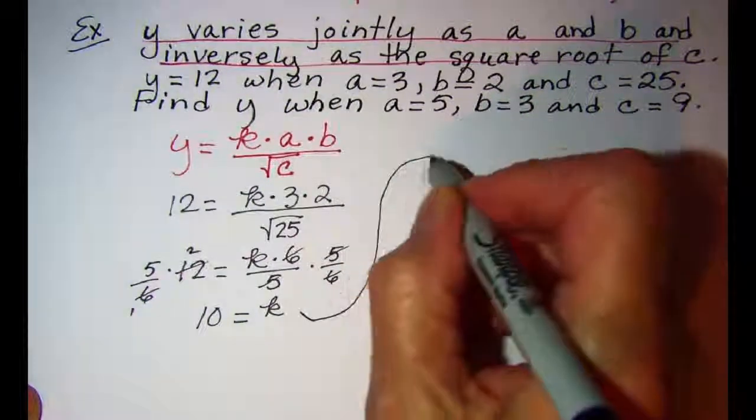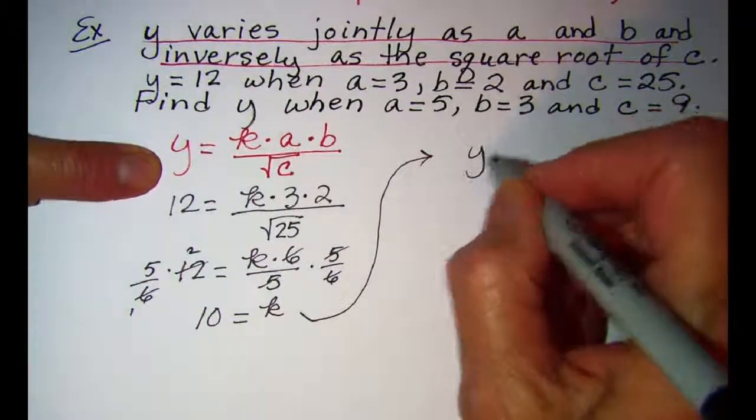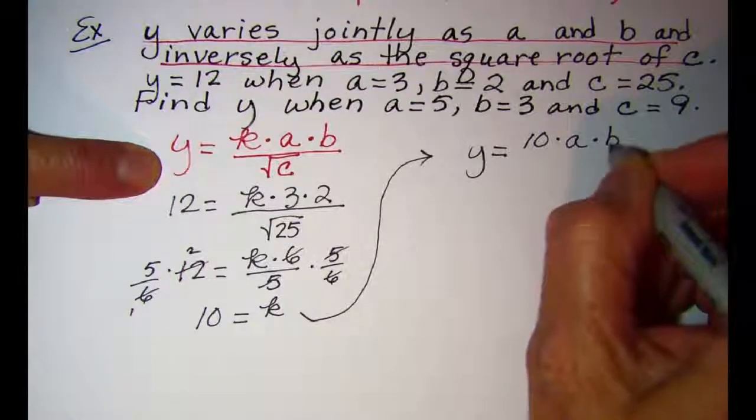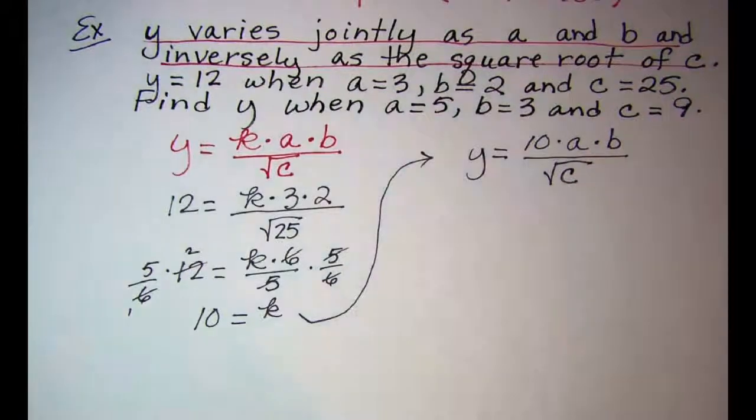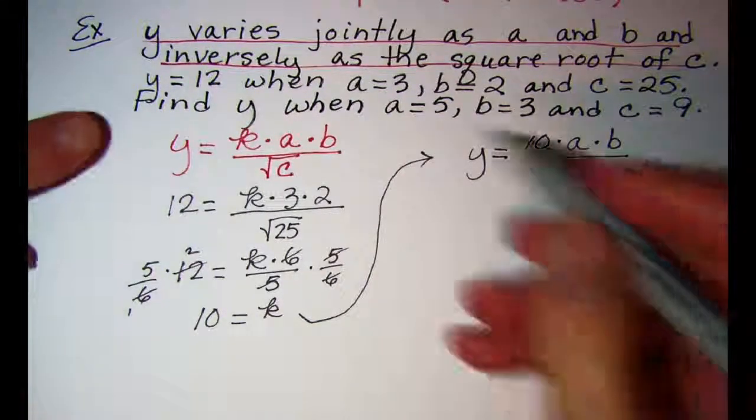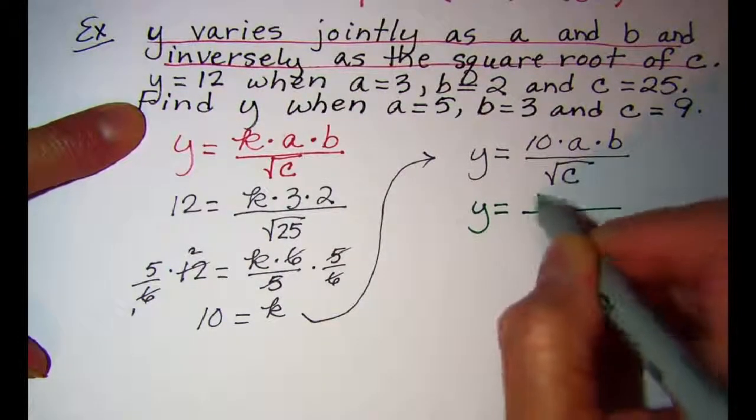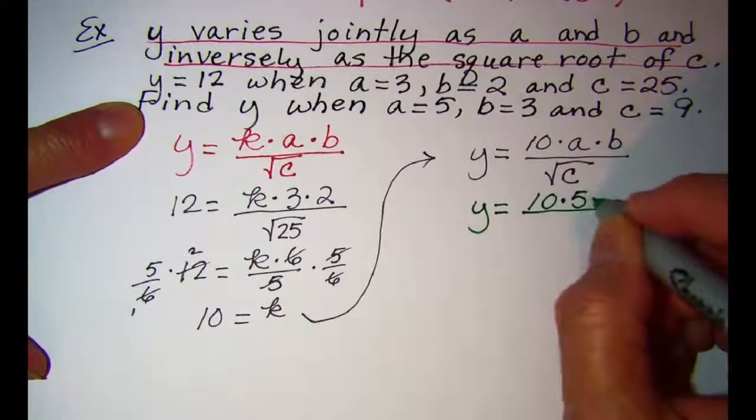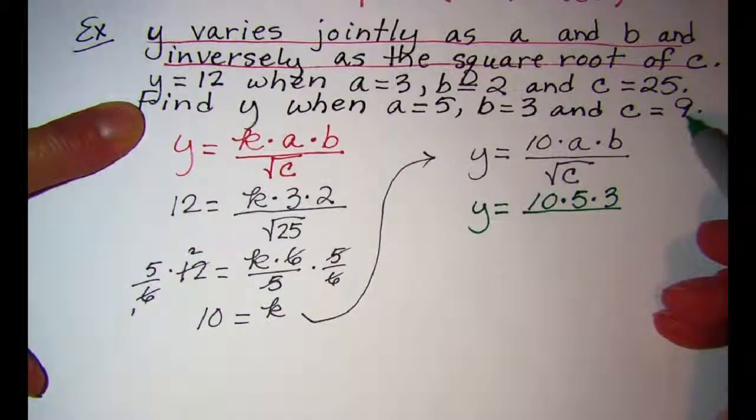Now I can put that k value back into my equation. y equals 10 times a times b divided by the square root of c. Then we'll finish our problem. Find y when a is 5, b is 3 and c is 9.